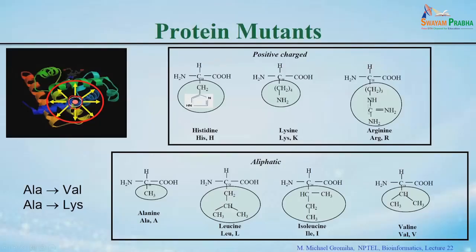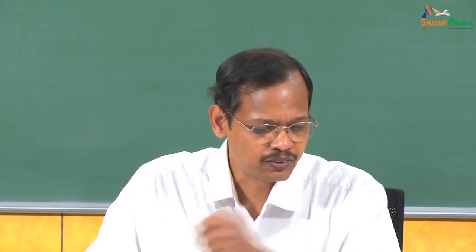This depends on where you mutate — either depending on the secondary structures or the location based on accessibility. Here I show some types of amino acid residues — the positively charged residues lysine, and aliphatic residues. If you mutate alanine to valine, whether it is stabilized or destabilized, or whether it will make contacts or cause steric clashes, depends upon the location where you mutate.